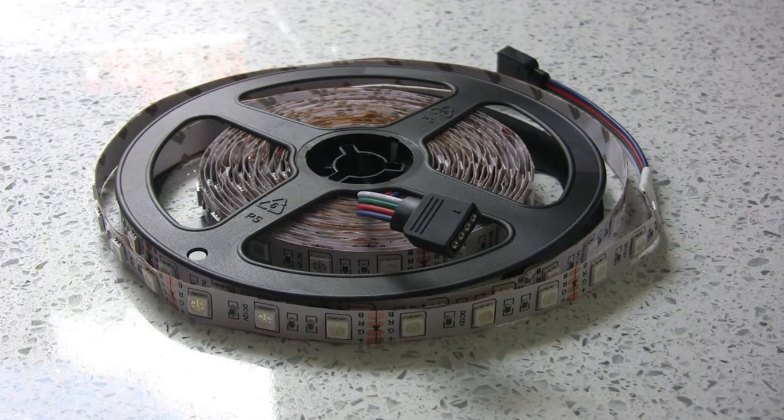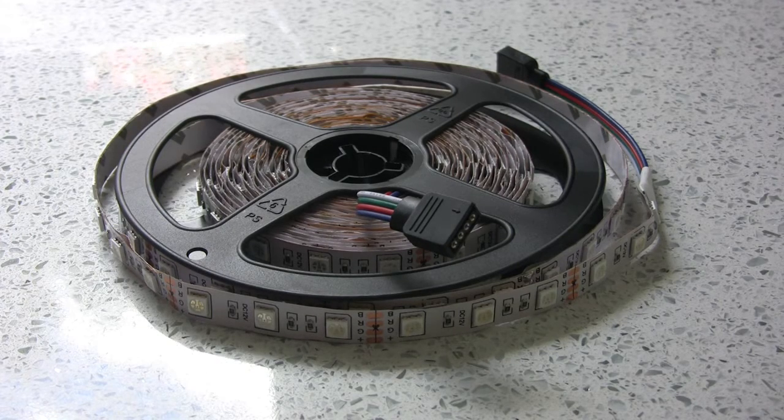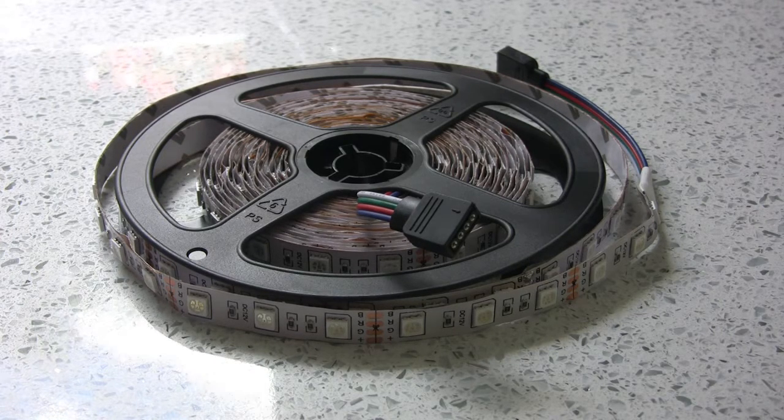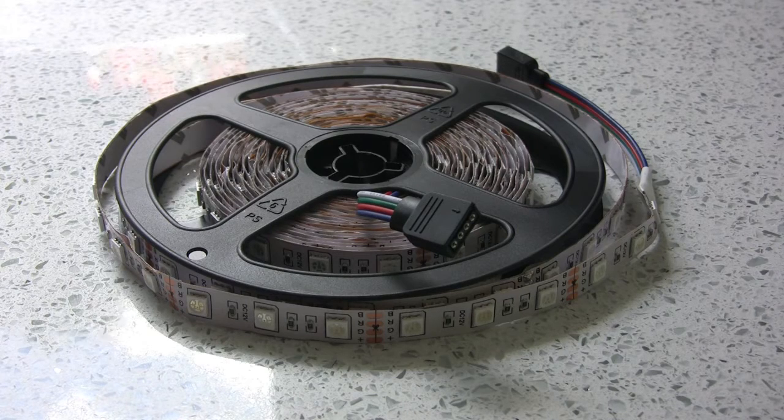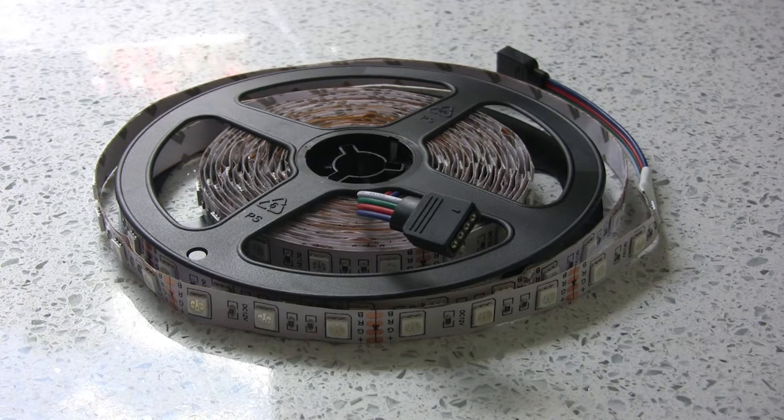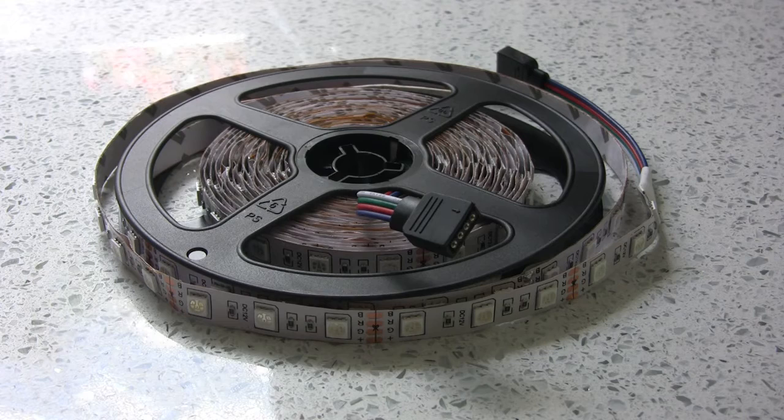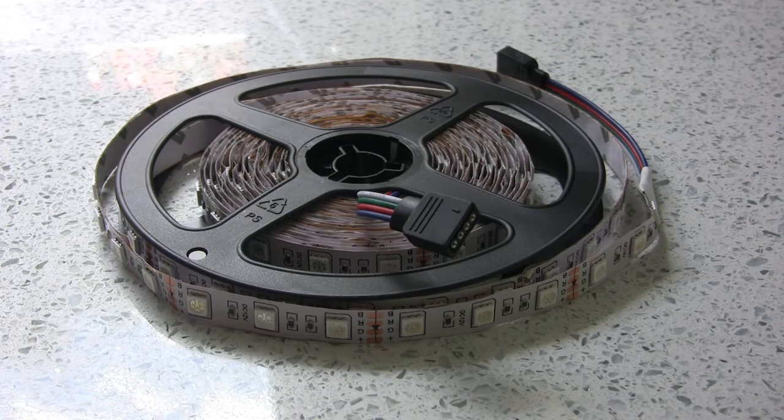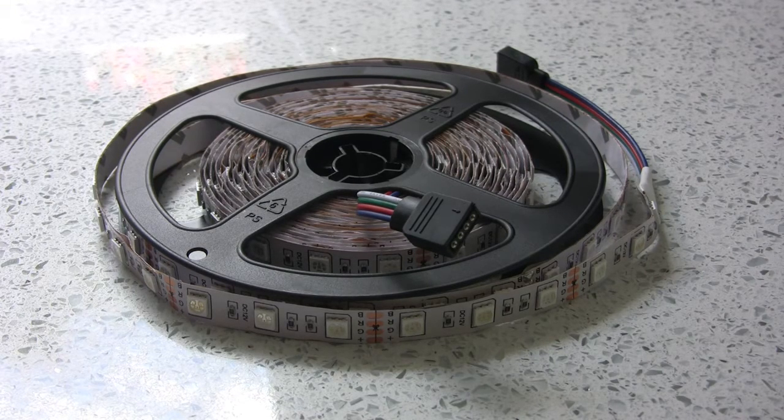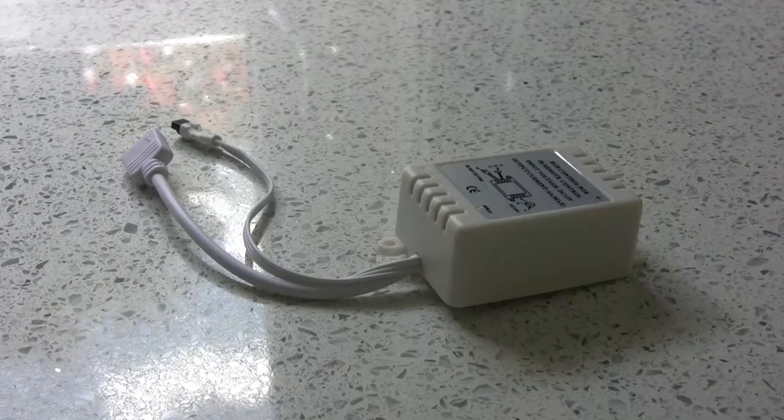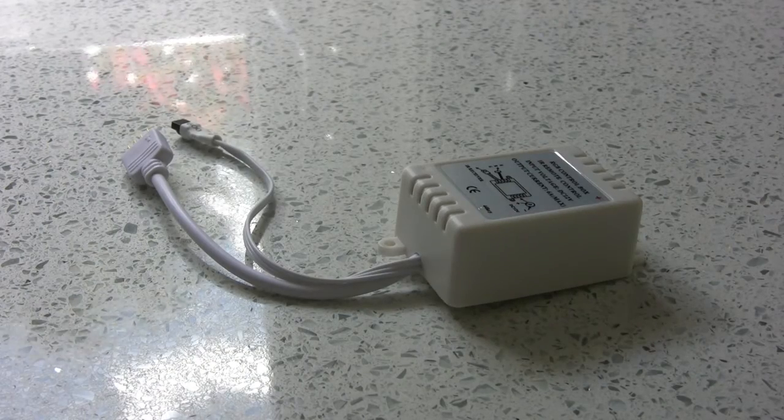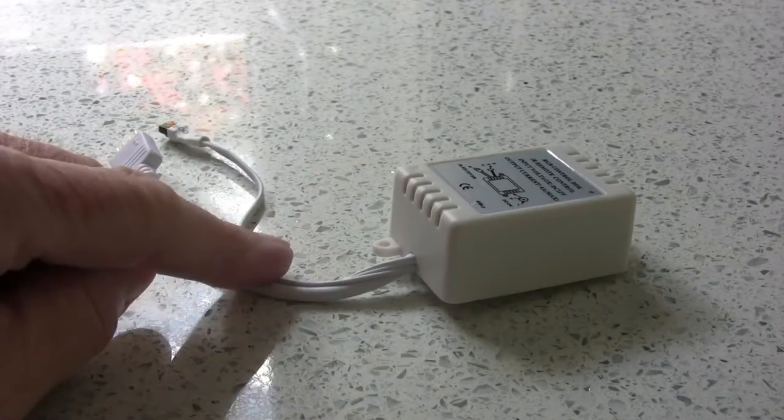Now these are RGB LEDs and they were on offer at the time. The whole package was just over $11 New Zealand dollars. The offer's finished, but you can still buy this package for $13 New Zealand dollars, which I would suggest is pretty good value.